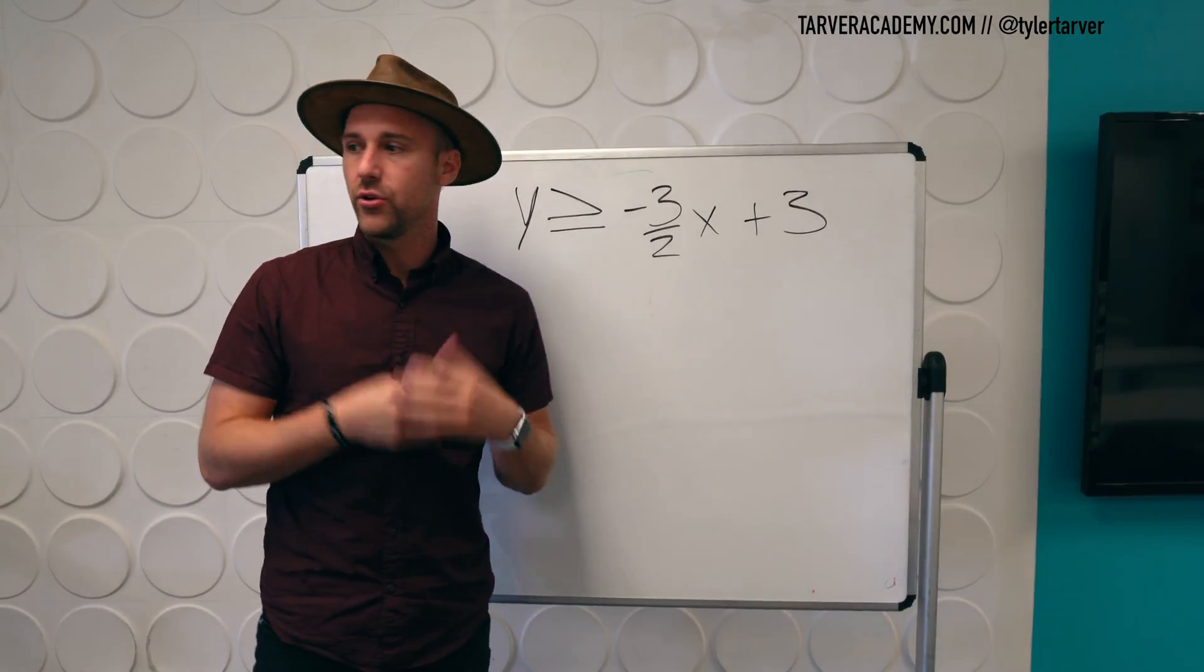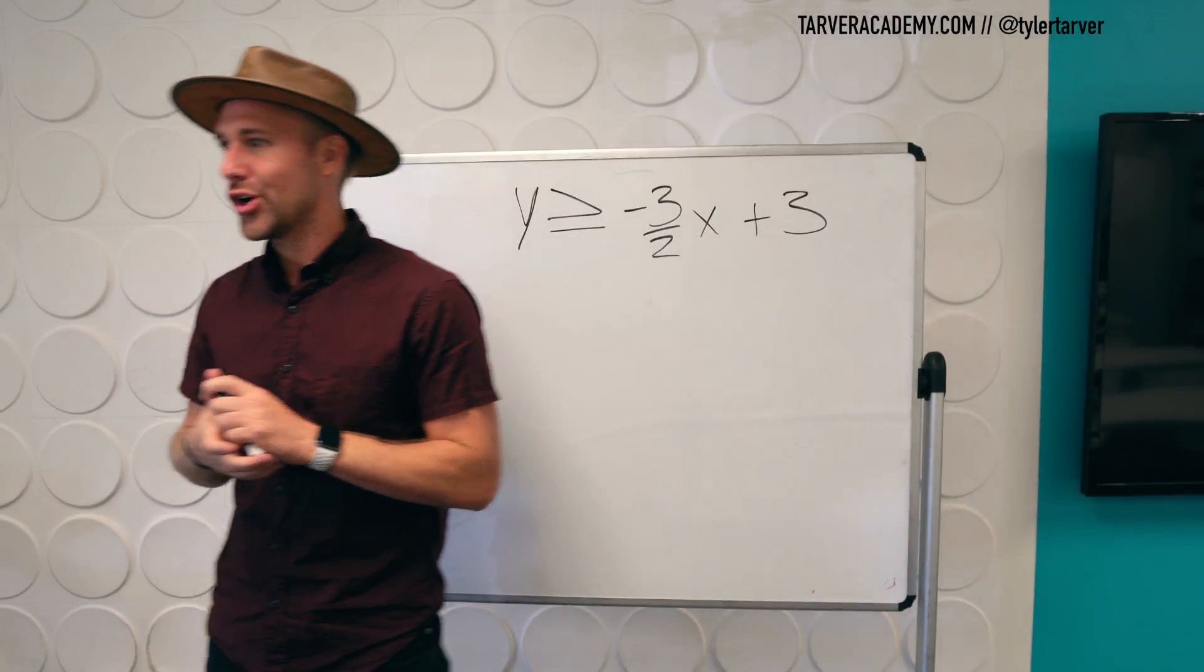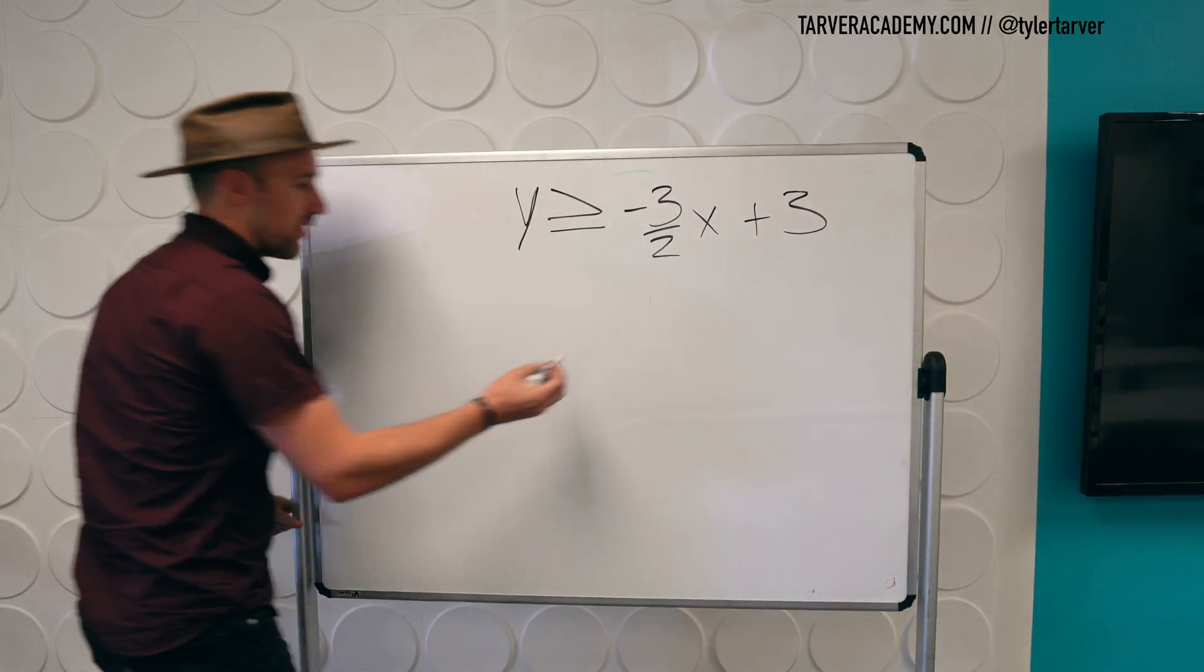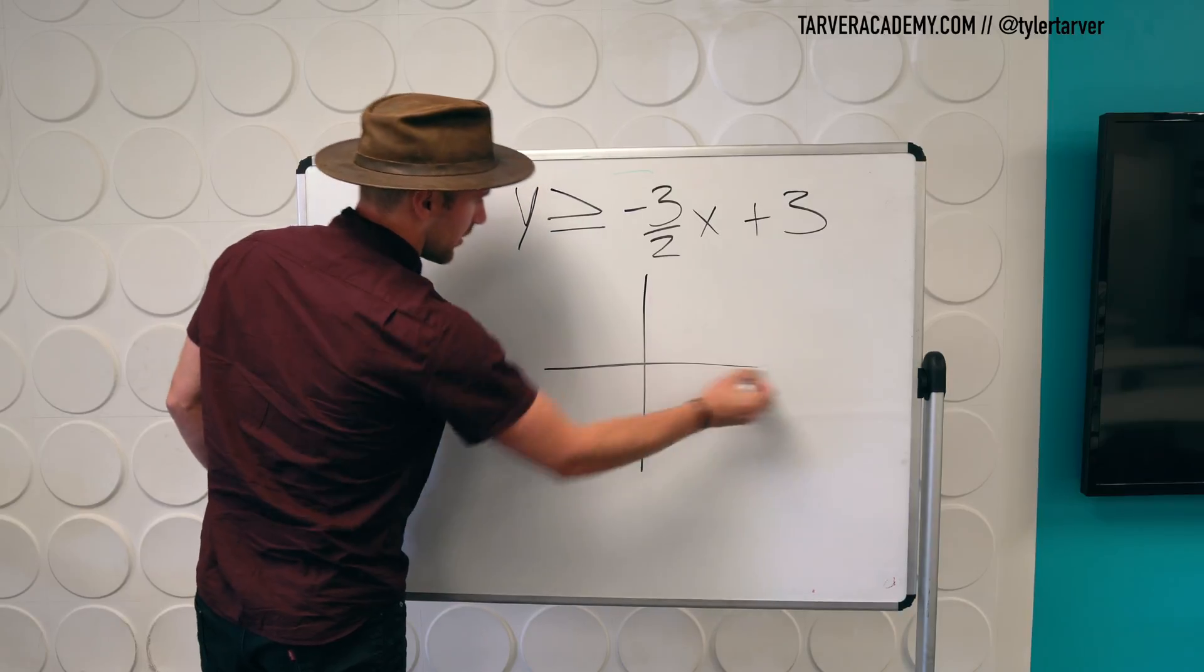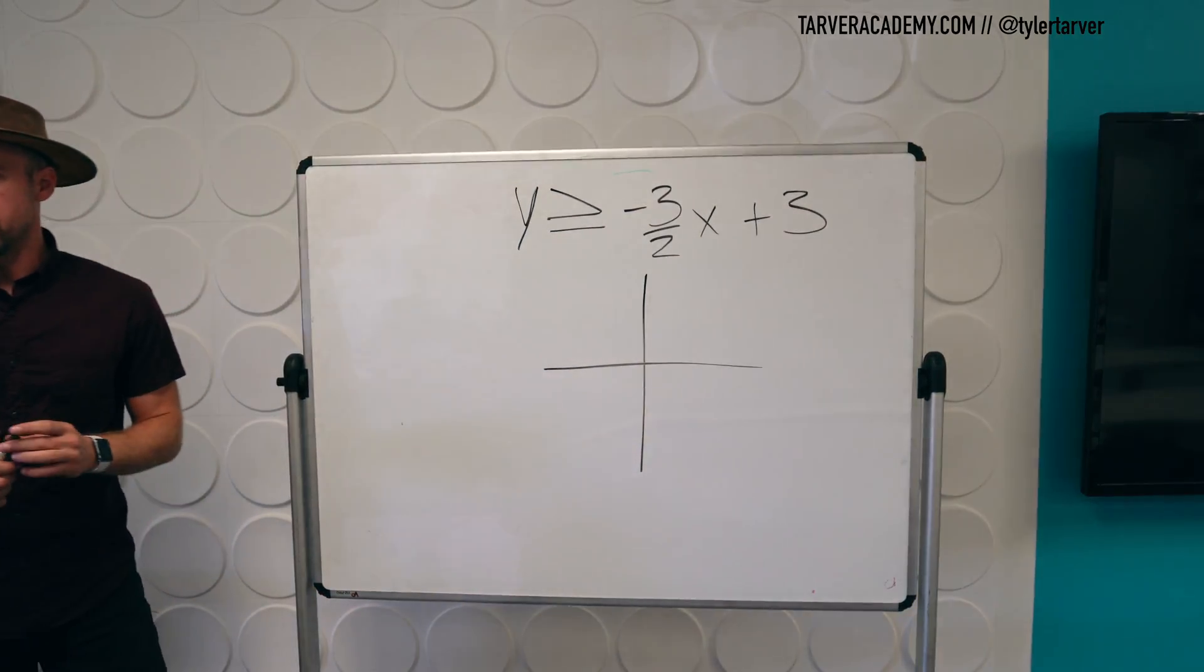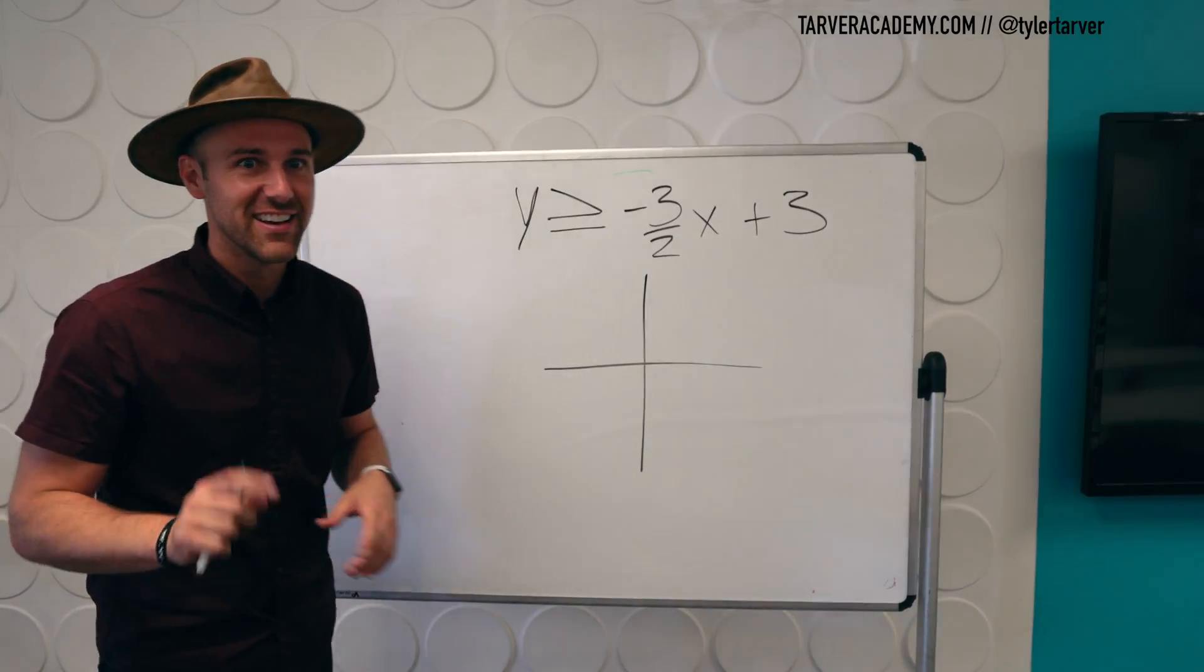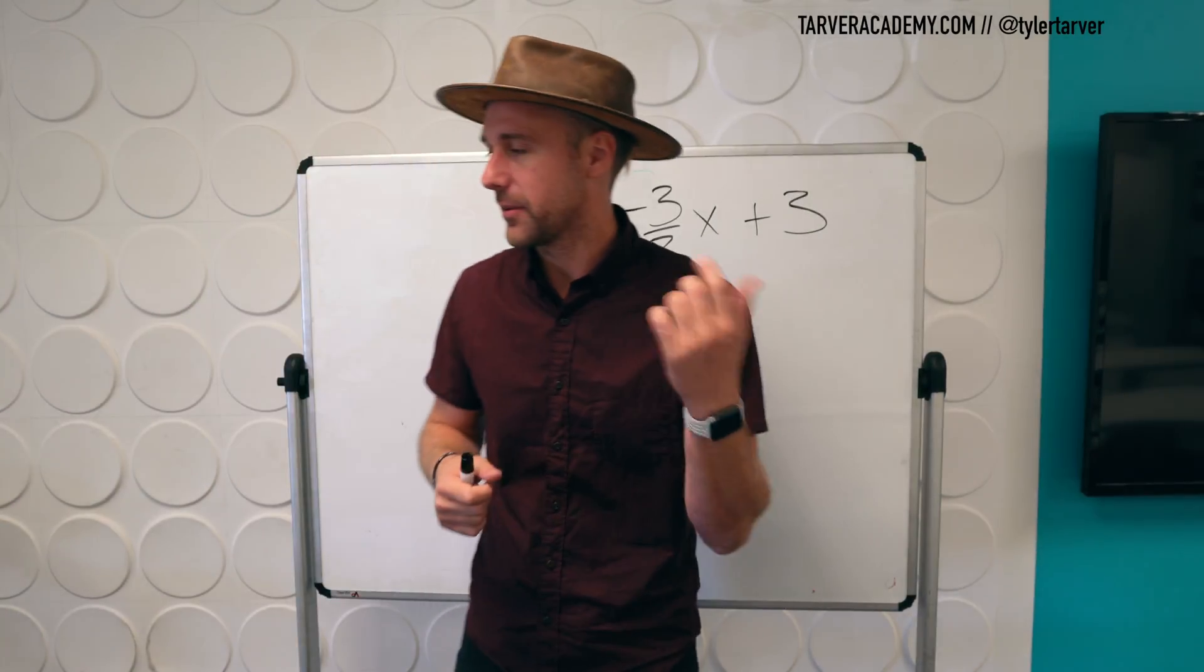So our objective is to graph this linear inequality. The first thing we need to do is we need to graph the line. May it be dashed, may it be solid. We'll talk about that on the next episode. I'm just kidding. We'll talk about it in a second.